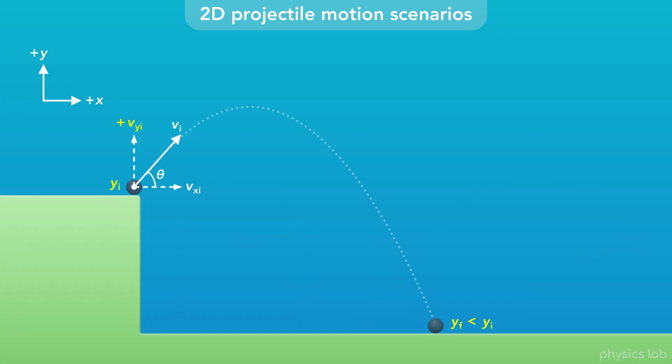Or the final height could be less than the initial height, like if it's launched from a cliff. If that's the case, the initial velocity could also be horizontal, so the initial y velocity is 0. Or the angle could even be below the horizontal, so the initial y velocity points downwards, and it's negative.